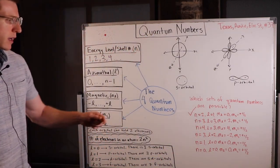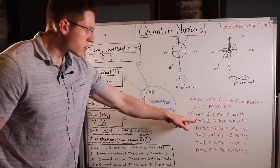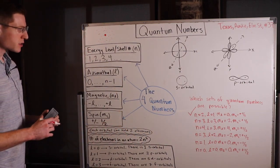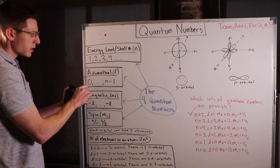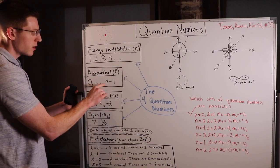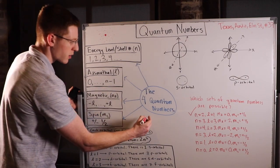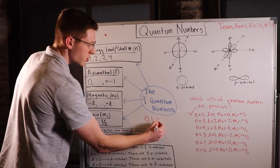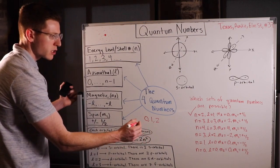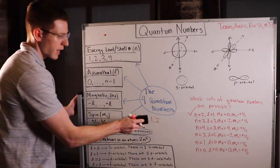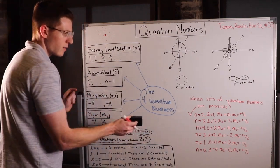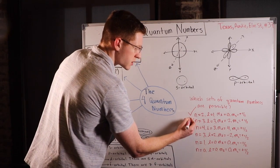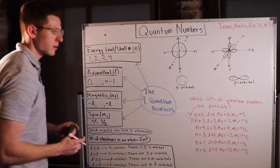The second example: N equals 3, L equals 3. If N equals 3, then L can only be 0, 1, or 2 — since it goes from 0 to N minus 1. So L cannot equal 3. We don't even have to look at the rest of it — this is not a possible set of quantum numbers.